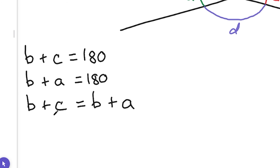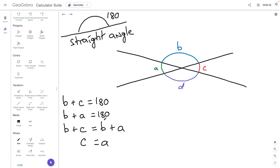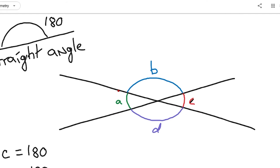So we have B plus C equals B plus A. We notice that we have a B on both sides, so if we subtract B from both sides, that leaves us with C equals A. Visually, B and C form one straight angle, and A and B form another straight angle. Because both of those straight angles equal 180, if we remove the part they share in common — which is B — what we're left with is C equals A. That's how we get that C is equal to A.